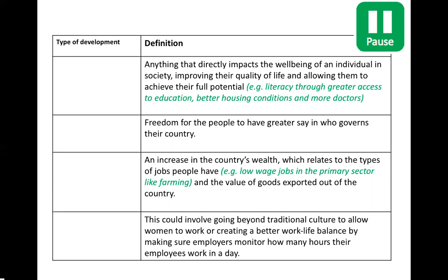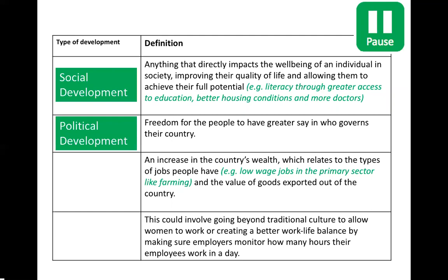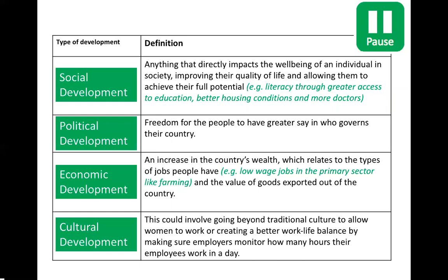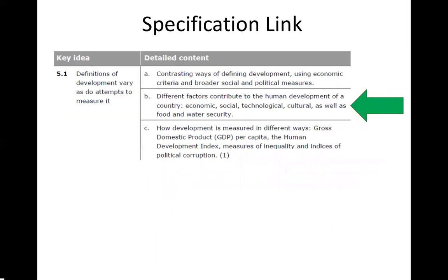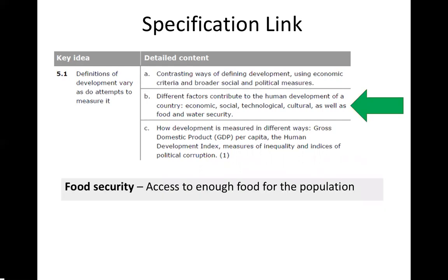The answers: the first definition is social development, the second is political development, the third is economic development, and the fourth is cultural development — well done if you got all four right. The second part of this lesson considers what factors have helped or hindered a country from developing. For example, economic factors like the government building ports or good road networks allow more trade, and we're going to look at different measurements of economic, social, technological, and cultural factors.